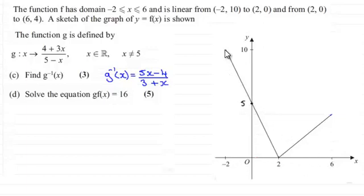which had a domain going from -2 to 6, and is linear from (-2, 10) to (2, 0), and from (2, 0) to (6, 4).